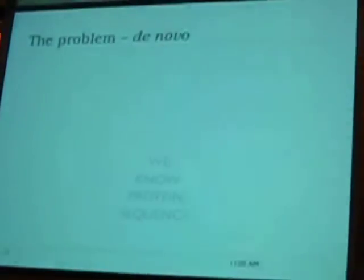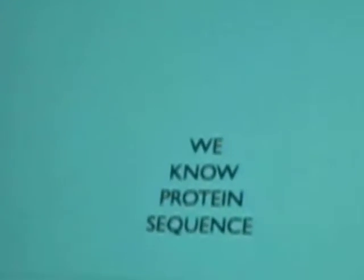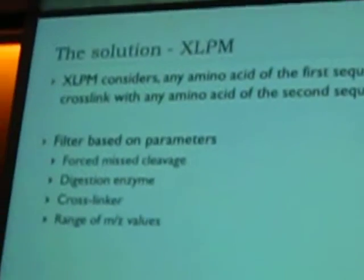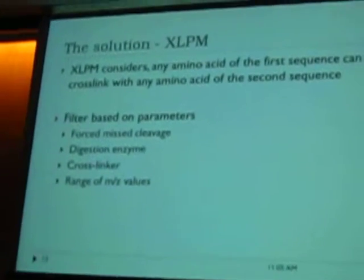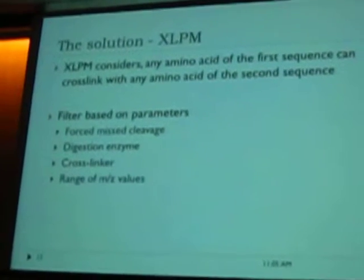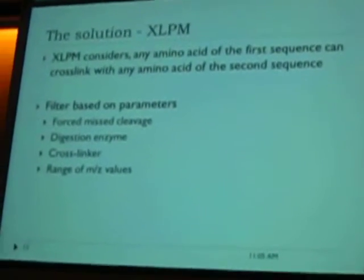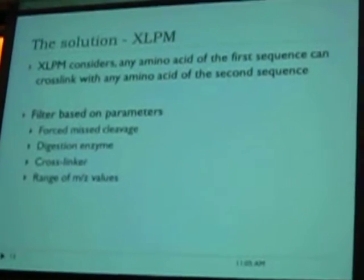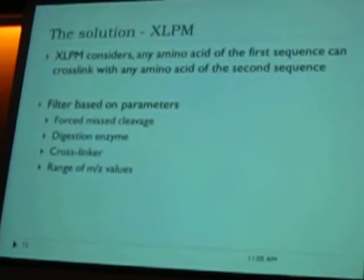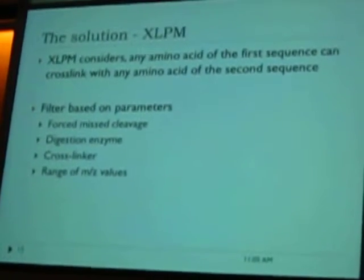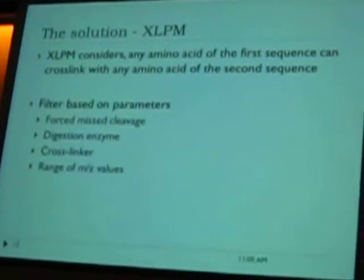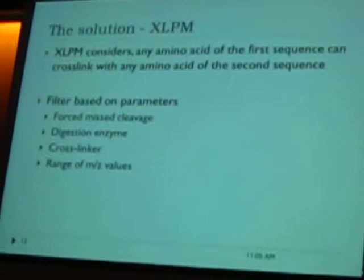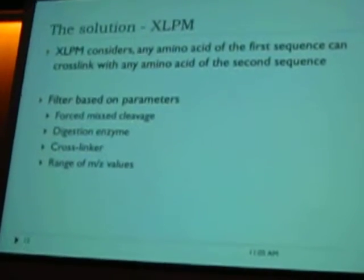What comes to our advantage? We know the protein sequence. To answer this question and get rid of these difficulties, we came up with XLPM — the Cross-Link Peptide Mapping Algorithm. Due to time limits I am not discussing the algorithm in detail, but in general, XLPM starts with the protein sequences and assumes that any amino acid of one protein sequence can interact with any amino acid of the other protein sequence — all the possibilities. Then there is user input: what kind of cross-linker they have used, what modifications, the digestion enzyme, and we have the spectra.